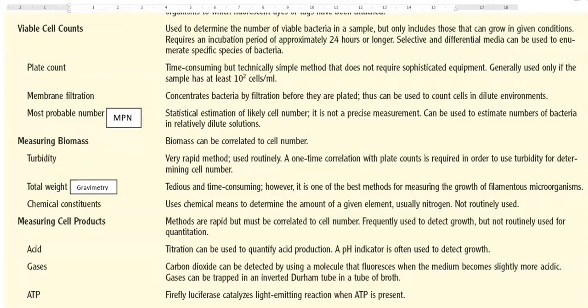Among this method, turbidity measurement is a very rapid and routinely used method there in the microbiological laboratory. Here a one time correlation of turbidity with that of the plate counting is required in order to use turbidity data for determining the exact cell number.